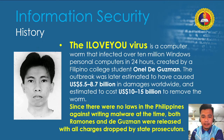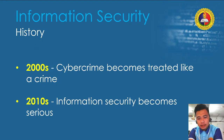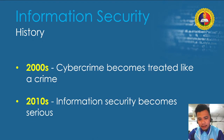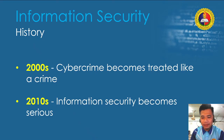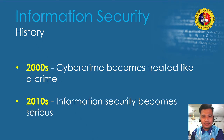By the 2010s, information security became serious. Security experts started to realize that the best way to protect data was to make it truly inaccessible to hackers. To this end, data encryption — which scrambles data to render it unreadable to unauthorized users — became more widespread. More about data encryption will be discussed in our future lessons. Those were the important moments of information security and how computer security became information security.